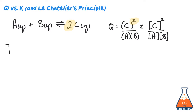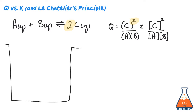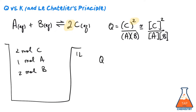Let's imagine that you prepared a solution in which you dissolve 2 moles of C, 1 mole of A, and 2 moles of B in a total volume of 1 liter of solution. We would then calculate a value for Q of 2 squared over 1 times 2, which would get us a value of 2.